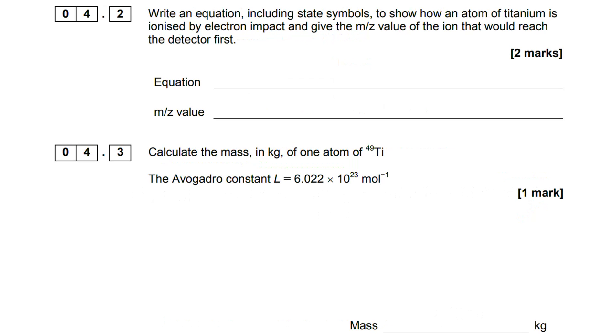Okay, moving on to 4.2 and 4.3. In terms of electron impact ionization, you do have to be able to write the equations, but there is a very similar pattern across all of them. You can see here we have Ti going to Ti+ and we're losing an electron.